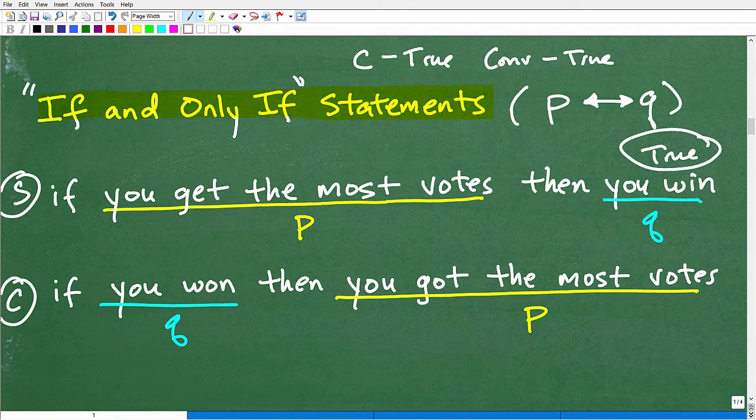So our statement's true. Now, let's find the converse of this statement. And there's one thing about finding the converse. When you write the converse, the words, you can kind of change them a little bit. But the gist of what we're saying is true. In other words, I'm using, I have win, the word win right here. So I'm not going to say if you win. You can use if you won. So if you won, then you got the most votes, right? So our hypothesis becomes the conclusion over here. And our conclusion over here becomes a hypothesis. So now this is the converse. So if you won, then you got the most votes. Is that a true statement? Yes, that's true as well.